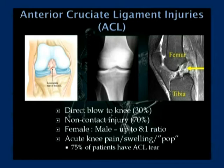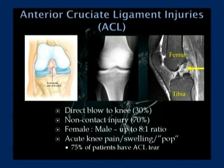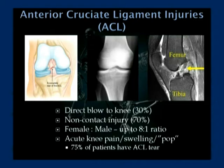Moving on to the ACL, or anterior cruciate ligament. Just like the meniscus, you can't see the ACL on an x-ray — we need an MRI to diagnose a tear. You should see a black stripe running across the MRI representing the ACL; its absence indicates a tear. Most ACL injuries are not from a direct blow — only about 30% come from contact or collision. Most are from jumping and landing in a funny position, so 70% of all ACL tears are simply from landing awkwardly.